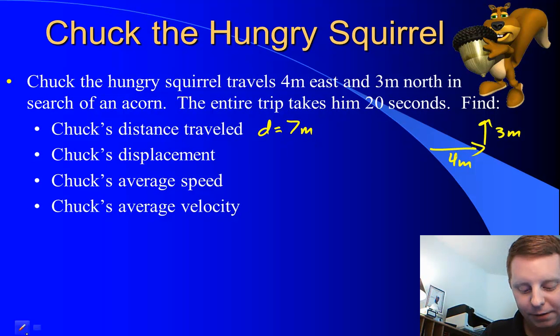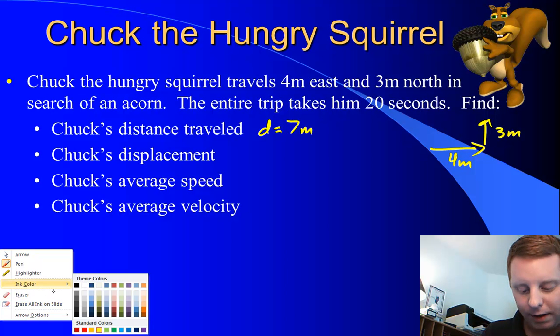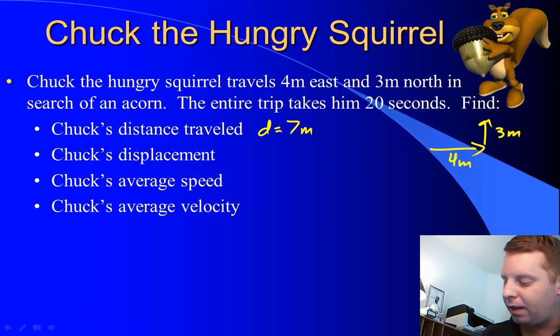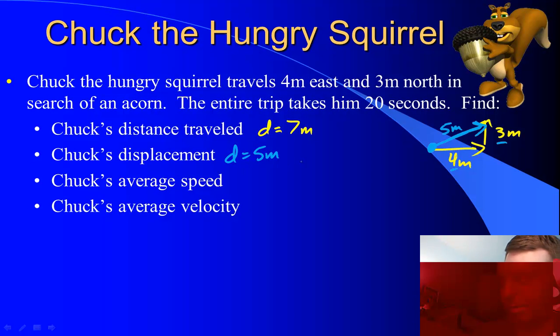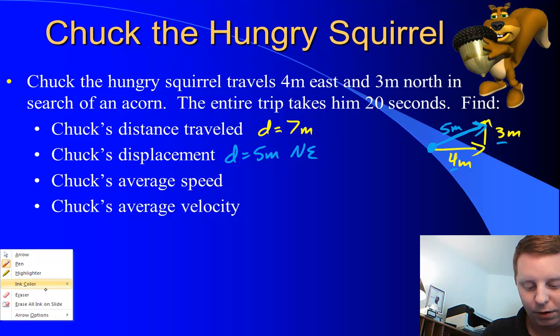But to find his displacement, we've got to work a little bit harder this time. We go from the starting point to the ending point. That's a right triangle. To figure out the hypotenuse, the length of the displacement vector, we can use the Pythagorean theorem, or recognize that we have a 3, 4, 5 triangle. So, Chuck's displacement is 5 meters in the direction, because it's a vector, northeast.